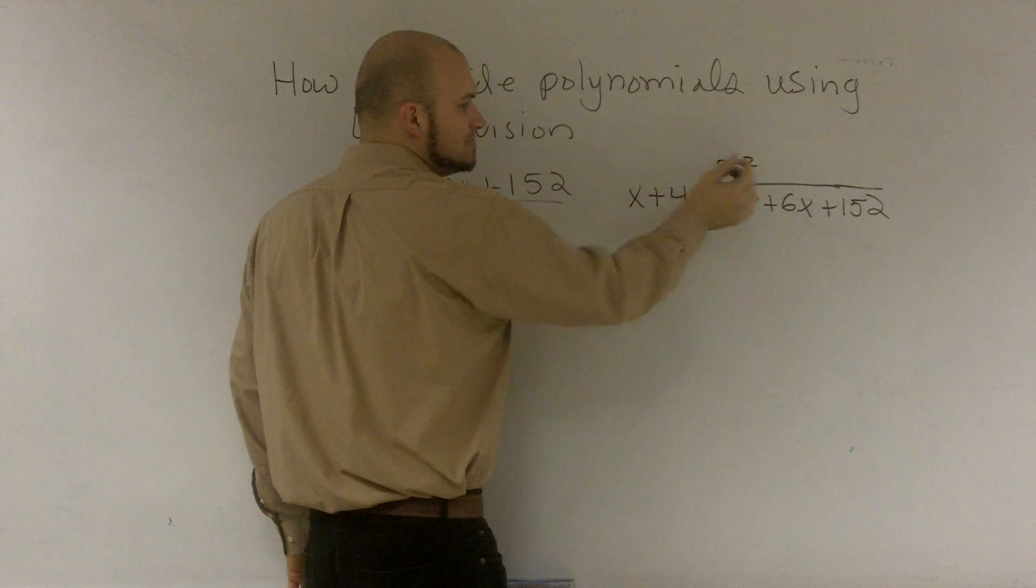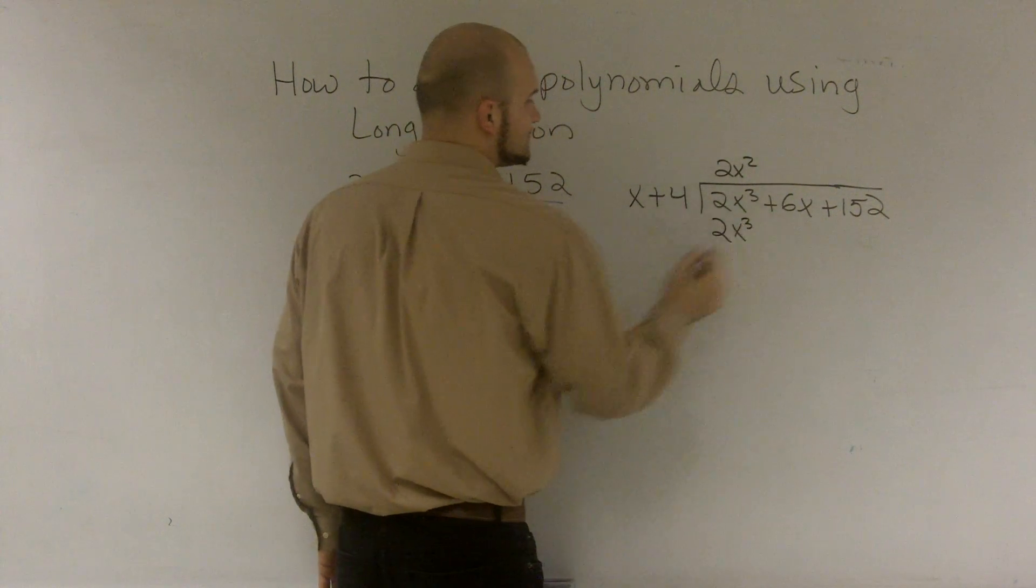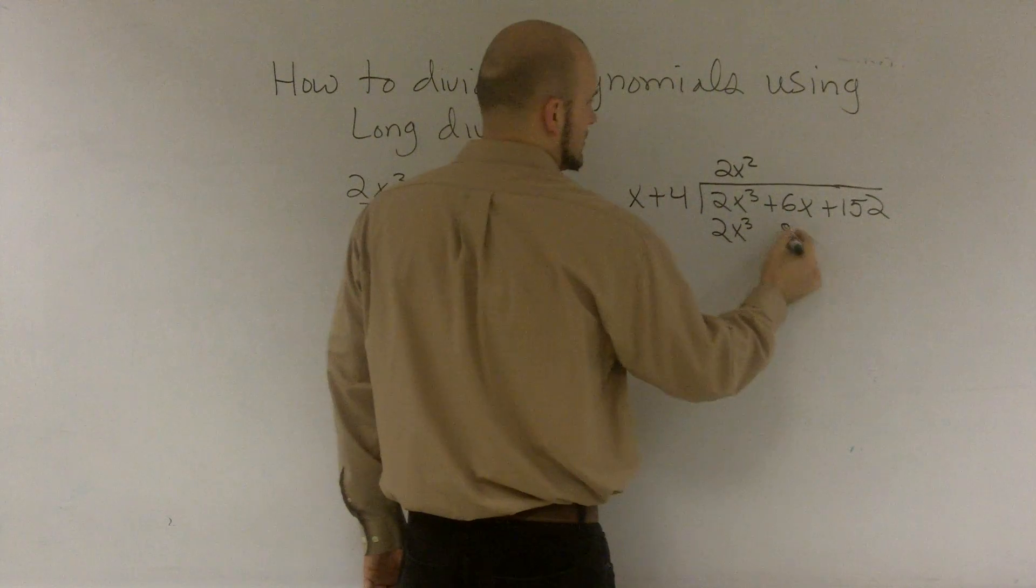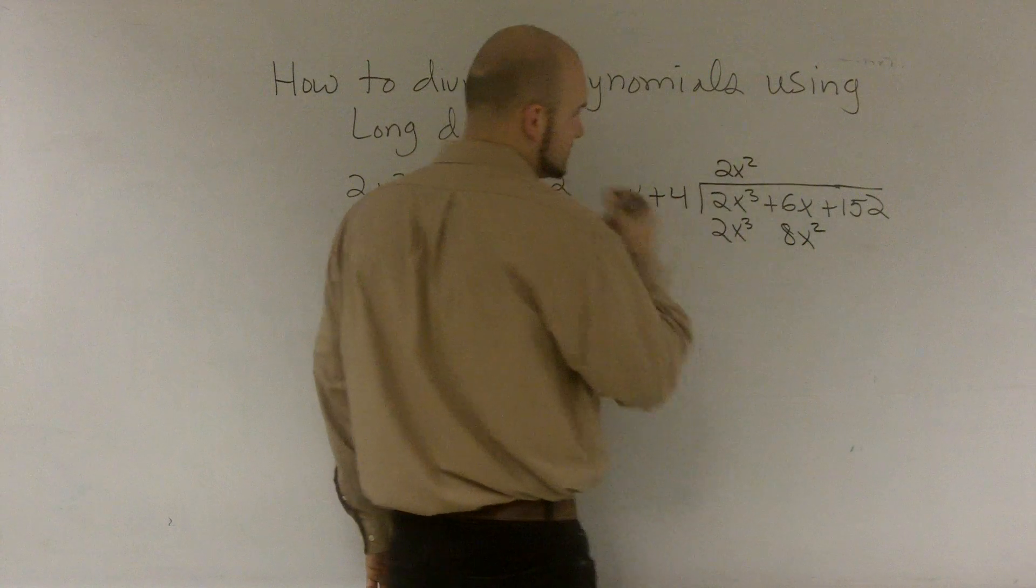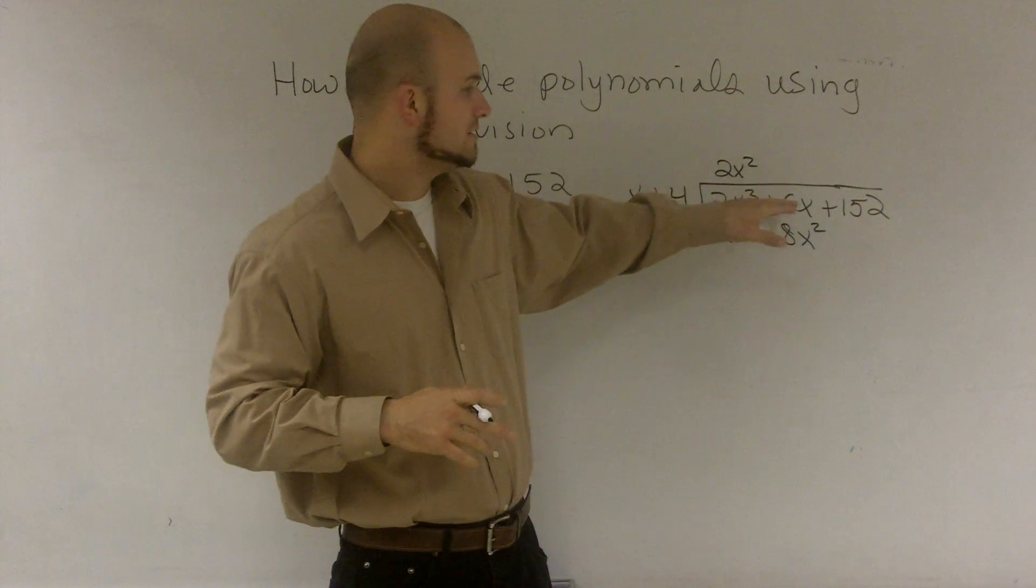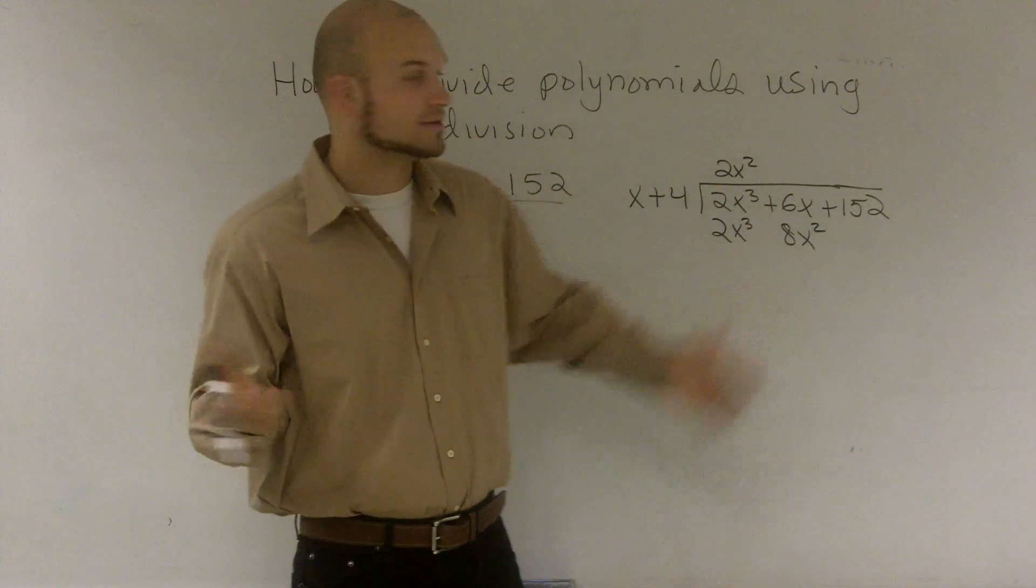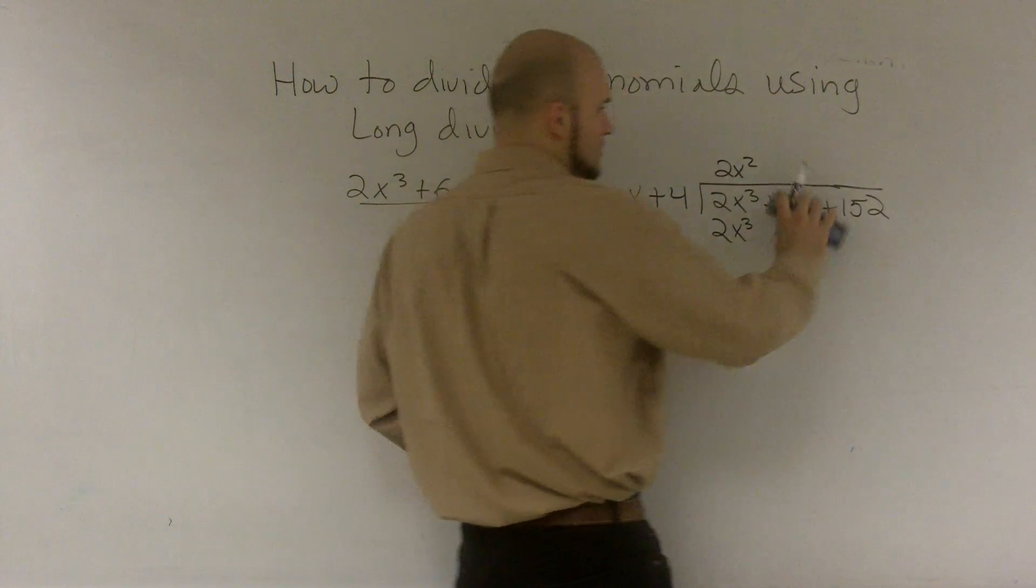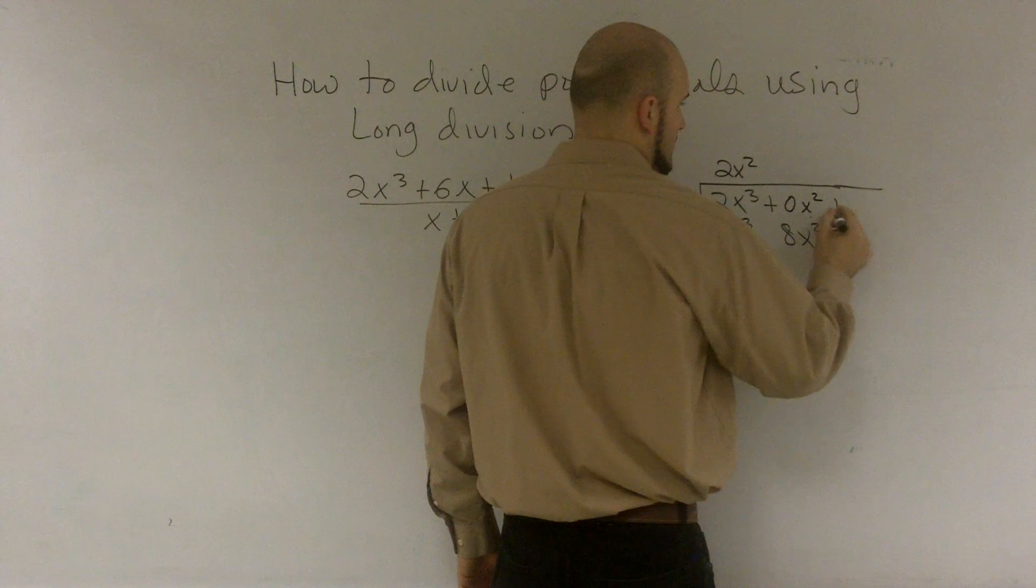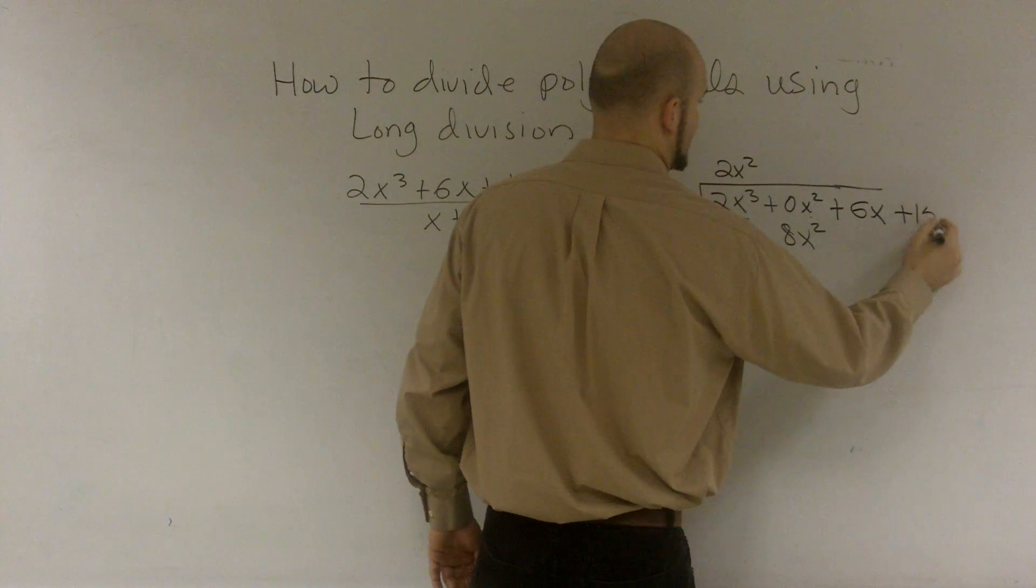But you've got to make sure you multiply times both terms. So 2x times 2x squared is going to be 2x cubed. And 2x squared times 4 is going to give you 8x squared. Now the main important thing is what you'll notice is we do not have an x squared in this term. So what we're going to have to do is we're going to have to substitute in a 0x squared. So what I'm actually going to do is I'm going to write 0x squared plus 6x plus 152.